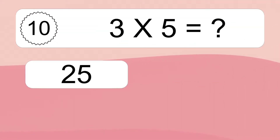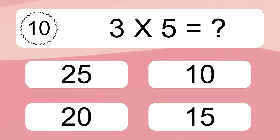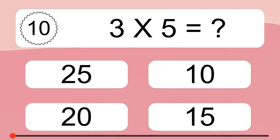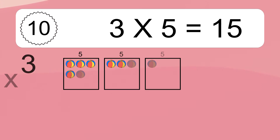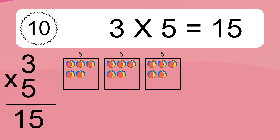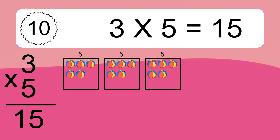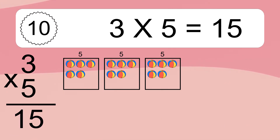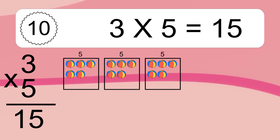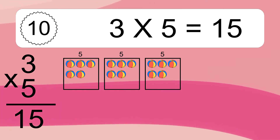3 times 5 equals what? 3 times 5 equals 15. We have 3 boxes, and each box has 5 colorful balls inside. If you count all the balls in all the boxes together, you will have 3 times 5 balls. This equals 15 balls.